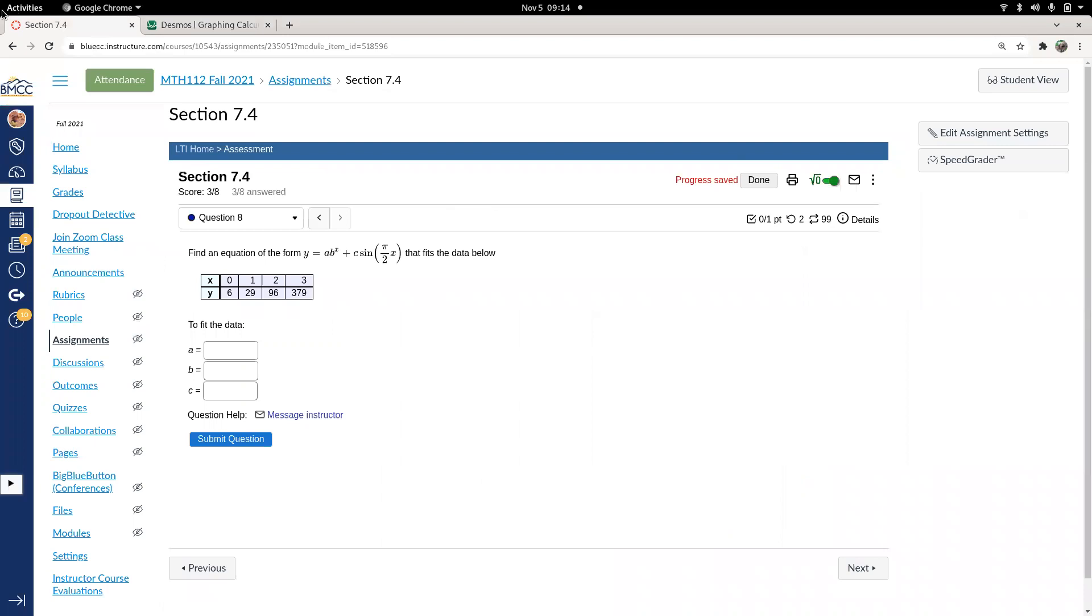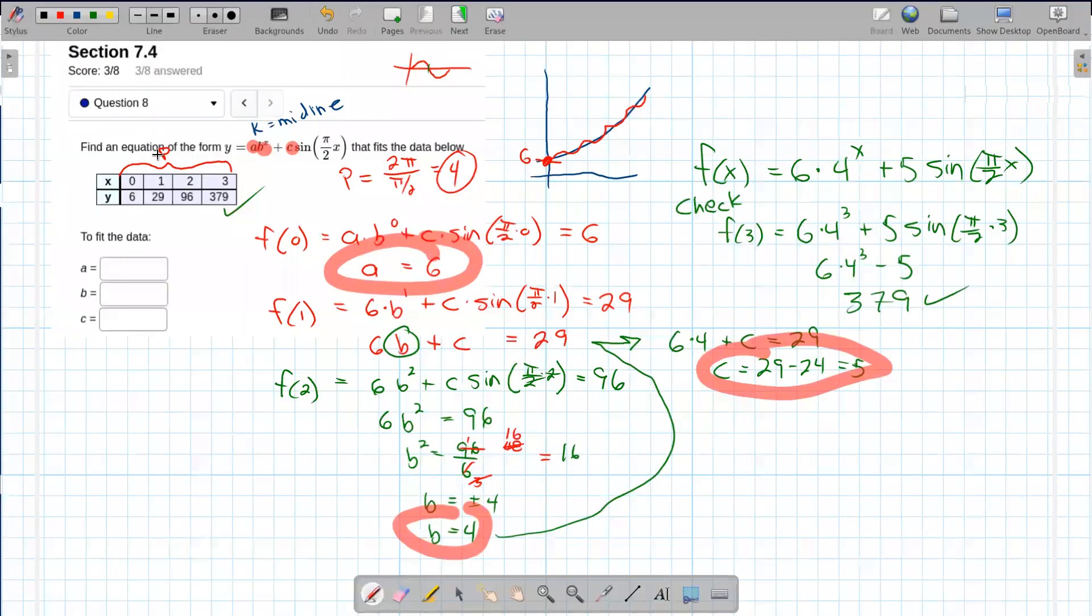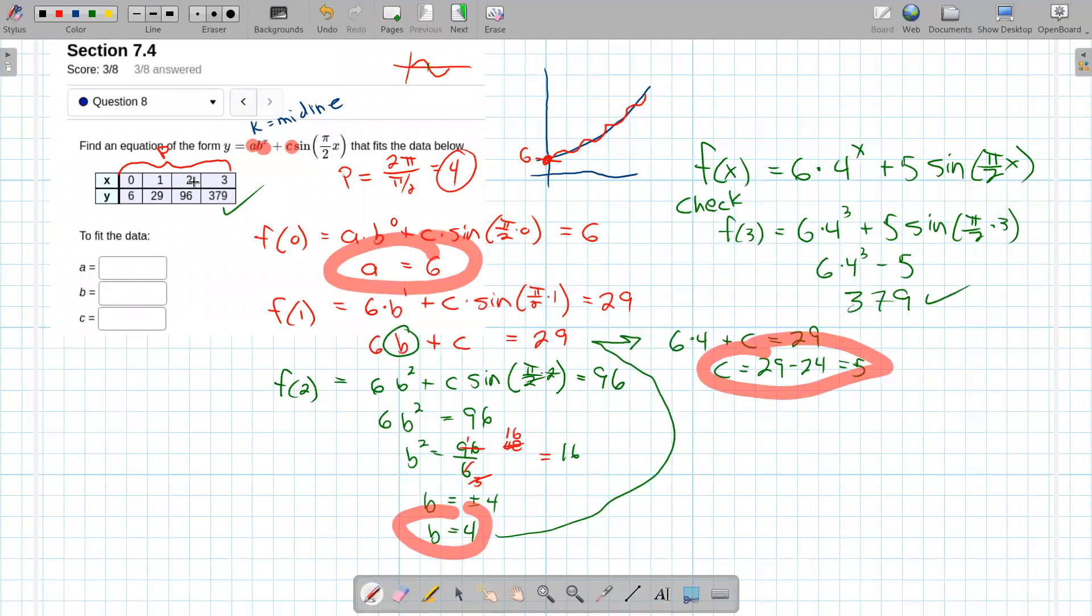And it was just a matter of plugging in the x values, comparing to the y values to try and figure out what a, b, and c were. And since we had three unknowns, we needed one, two, three equations. So that's where we learned way back in maybe intermediate or elementary algebra for solving equations.